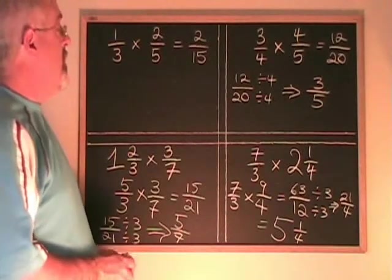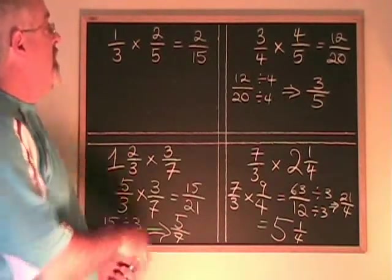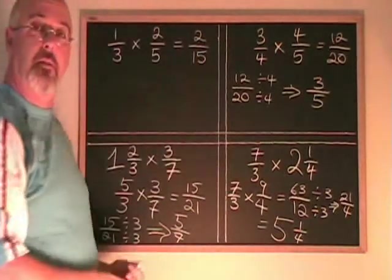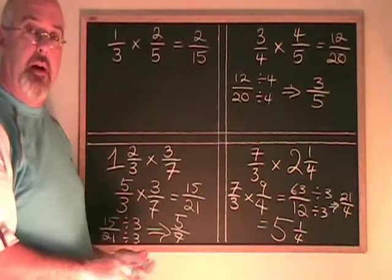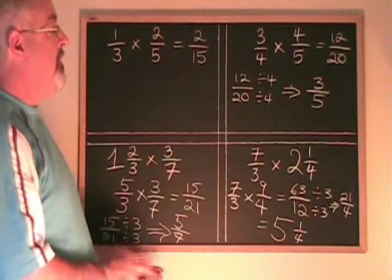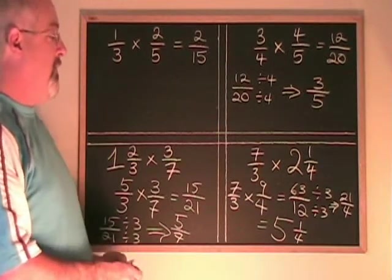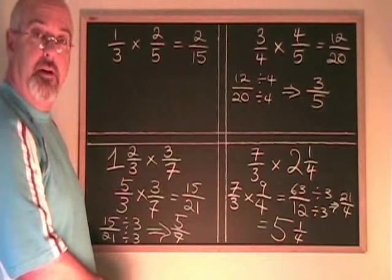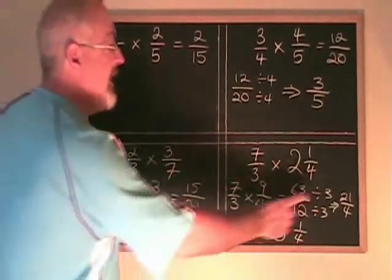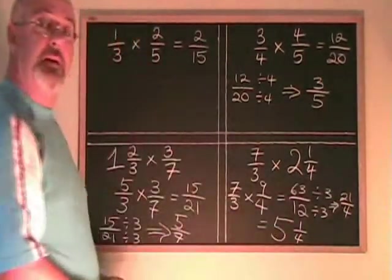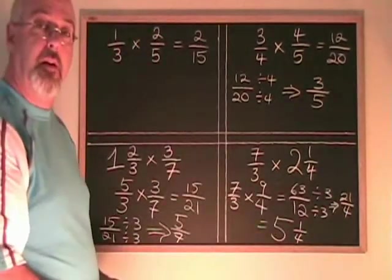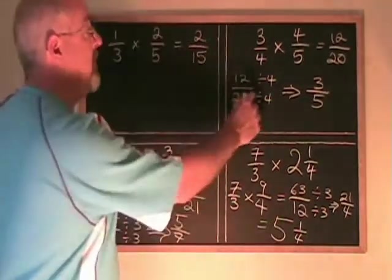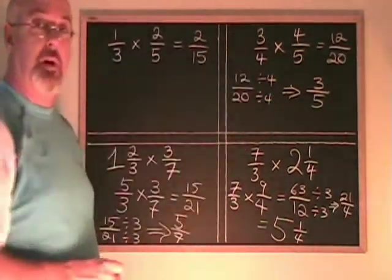Multiplying fractions is quite straightforward: top times top equals new top, bottom times bottom equals new bottom. But to do it with many examples, we also have to be able to convert a mixed number into an improper fraction, convert an improper fraction back into a mixed number to give our final answer in its most simplified form, and we often have to reduce fractions as well.